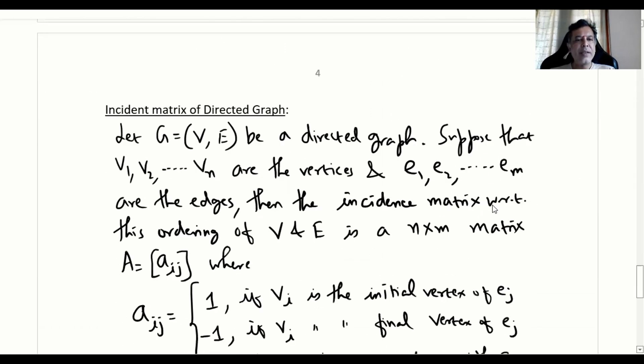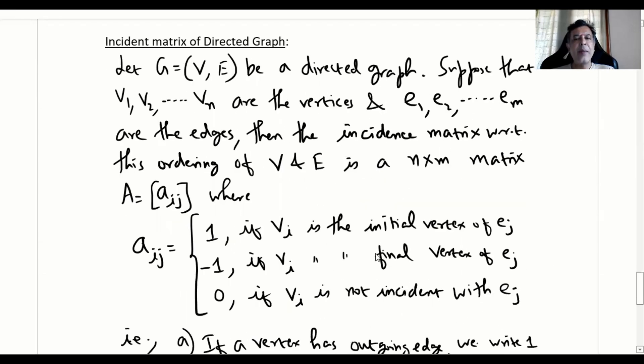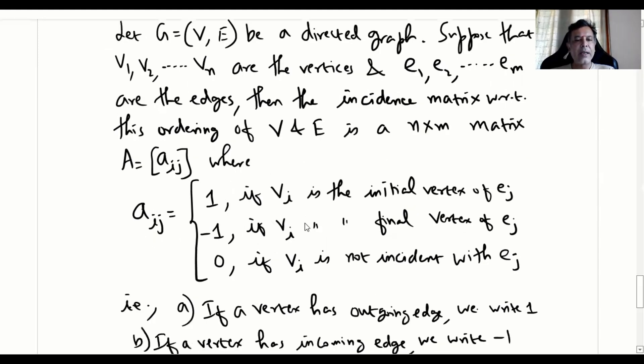For a directed graph, the incident matrix definition: let G = (V, E) be a directed graph. Suppose that v1 to vn, n vertices are there and e1 to em, m edges are there. Then the incidence matrix with respect to this ordering of V and E is again an n by m matrix. Here what we do, if the direction is outgoing arrow, you put 1. If it is incoming arrow, you put -1. If there is no arrow, direct access, then you put 0.